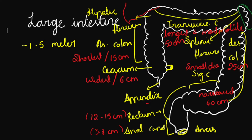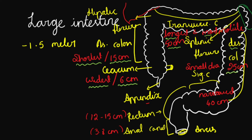Revision: Cecum — diameter 6 cm, widest part. Ascending colon — shortest part, 15 cm. Then the hepatic flexure. Transverse colon — longest and most mobile part, 50 cm. Then the splenic flexure. Descending colon — 25 cm. Sigmoid colon — narrowest part of the large intestine, 40 cm. Rectum — 12 to 15 cm. Anal canal — 3.8 cm.